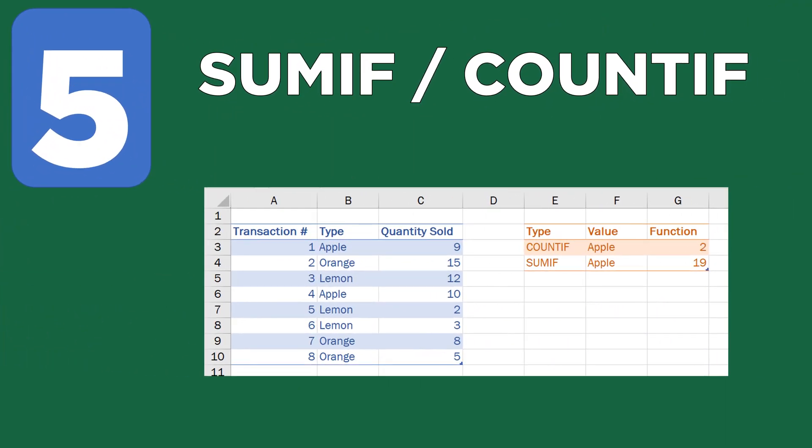Number five: SUMIF and COUNTIF. This is a very easy function that most people don't know how to use. In the example I have here, I have a few transactions of different things I sold and the quantity. The COUNTIF on the right-hand side demonstrates how this works — I'm checking how many times 'apple' shows up in the data, and it's showing two, because apple is listed twice. The SUMIF does almost the same thing but adds those numbers in the quantity sold, so it adds the 9 and the 10 to give 19.